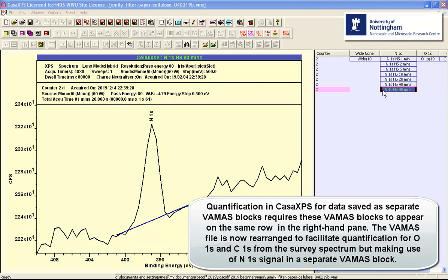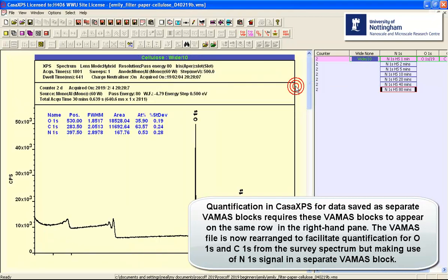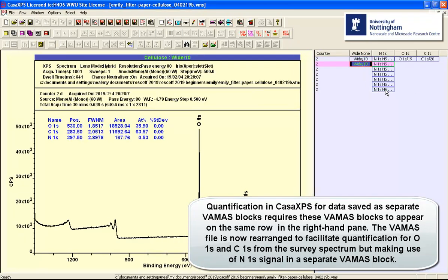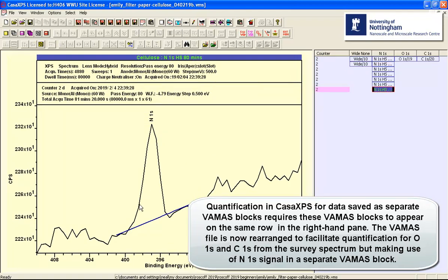I wish to quantify now the survey against this nitrogen 1S that was measured for 80 minutes. And in order to do this, I need to have these two in the same row. One way of doing that would be to take a copy of the survey spectrum. So here it is, the copy, and here's the narrow scan data collected at 80 pass energy, just the same as the survey spectrum, just a longer acquisition time.